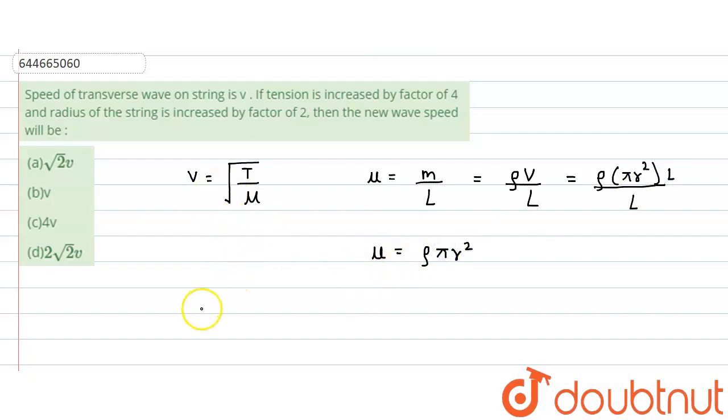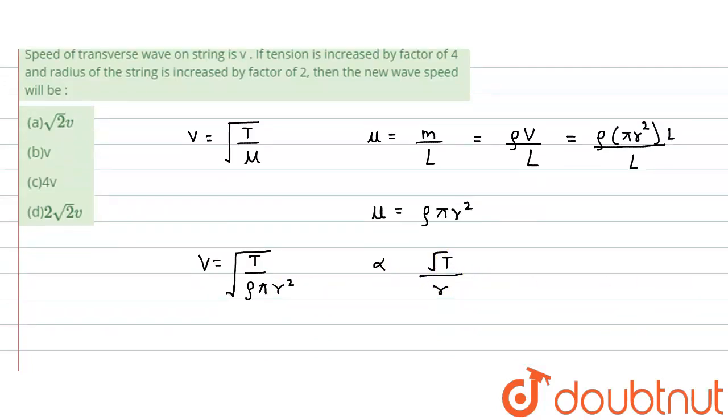Now our formula could be modified as v equals square root of T divided by ρ times π r². From here we can see that our velocity is directly proportional to square root of tension and inversely proportional to r.